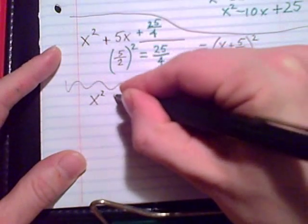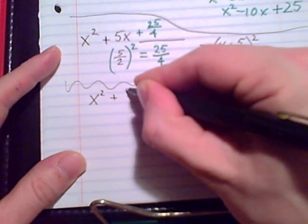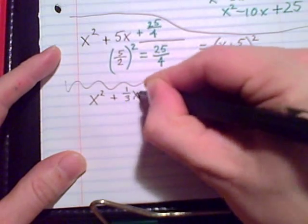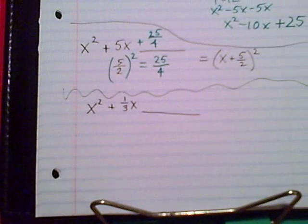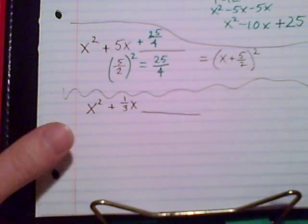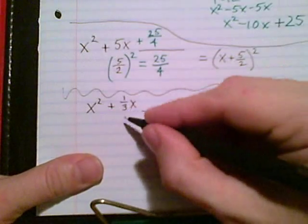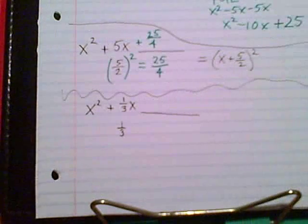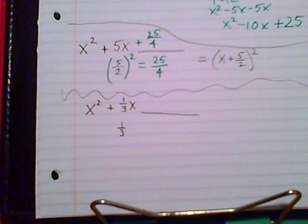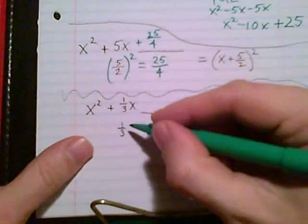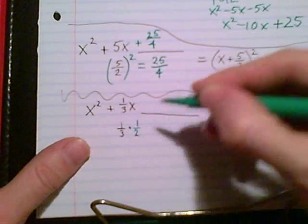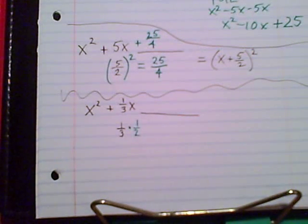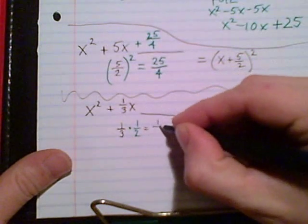How about another tricky one? Let's make it 1/3 x and complete the square there. Our coefficient of x is 1/3. What we're usually doing is dividing by 2 — or cutting in half, which are the same thing. When I see a fraction, instead of dividing by 2, I'll find one half of it: times 1/2 is exactly the same as divided by 2. That's my preference to stay on track.